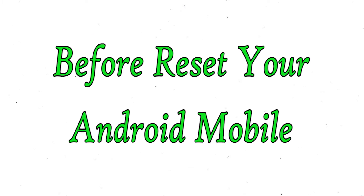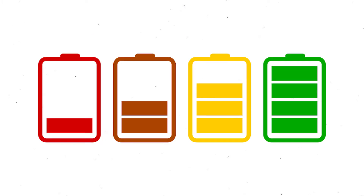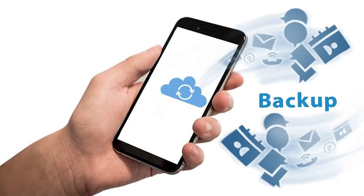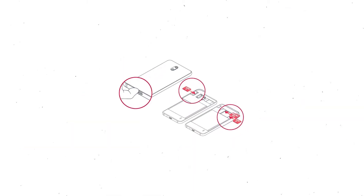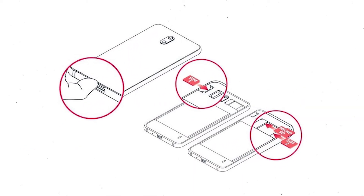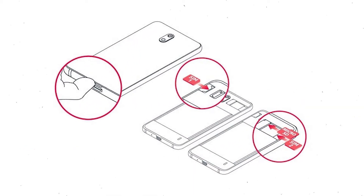Before resetting your mobile, charge your mobile if the battery is less than 50%. You need to make sure that the data on your device is backed up so you do not lose valuable photos or documents. Reset deletes all your mobile data, so you should back up all important data and remove SIMs and SD card.